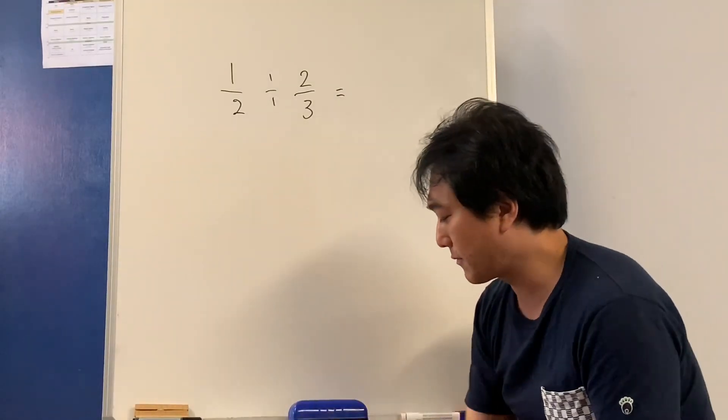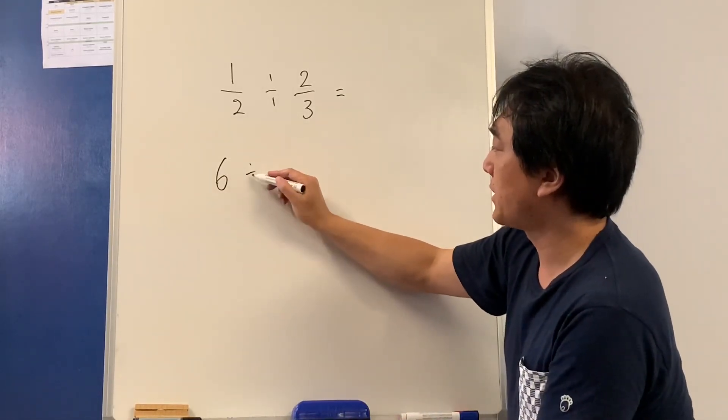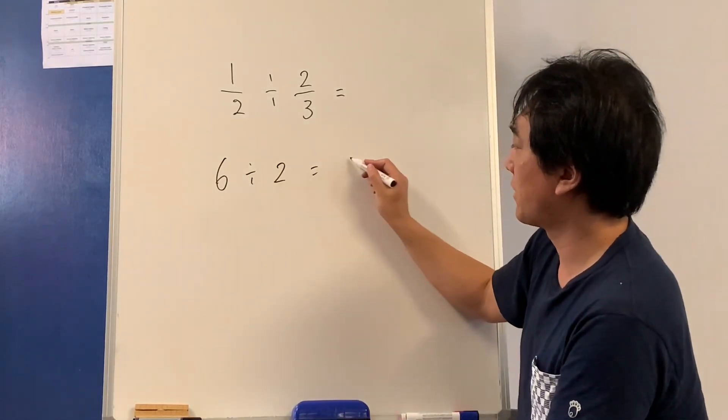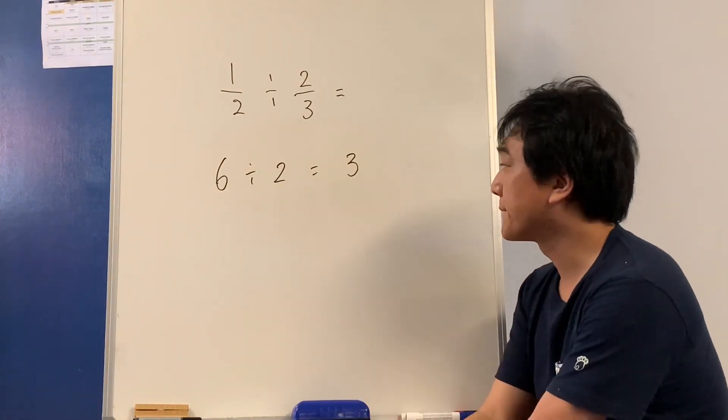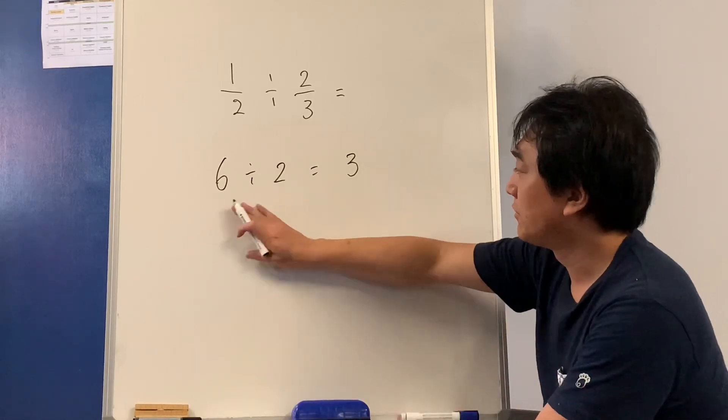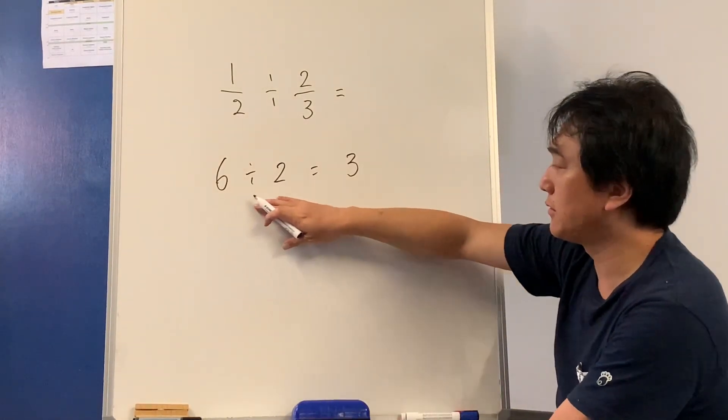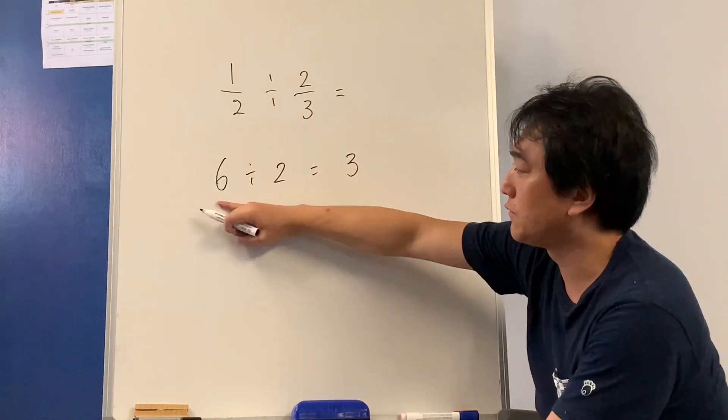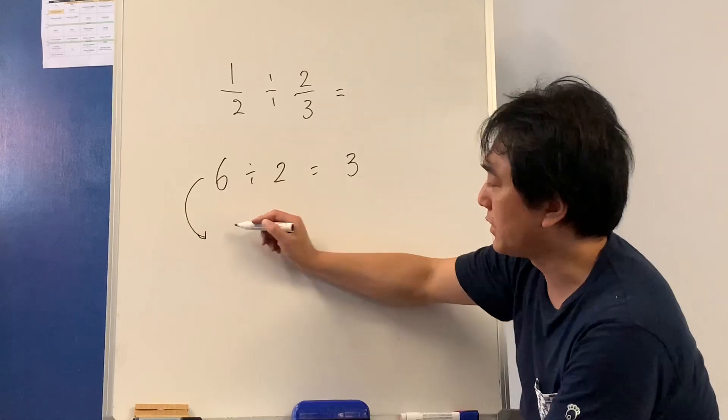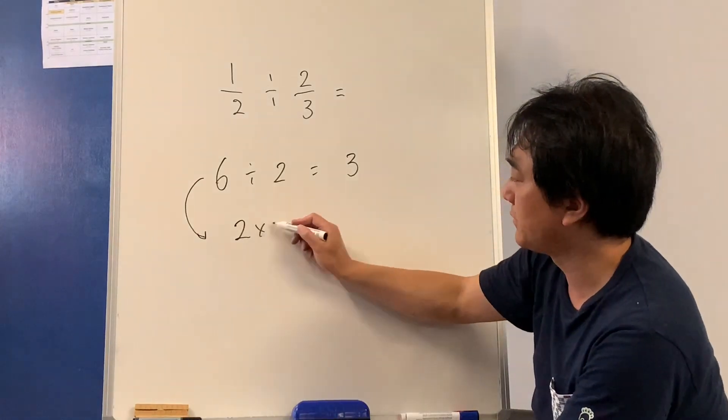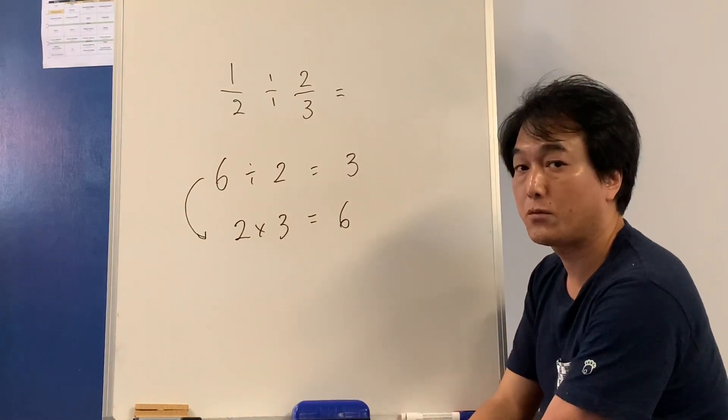six divided by two equals three. Do you remember that? I'm sure you can do this. Now, a related number sentence or the number fact to this is two times three equals six. Are we good with that?